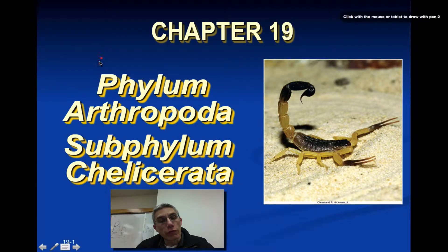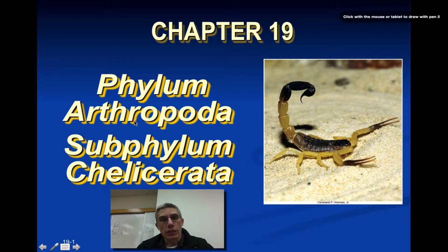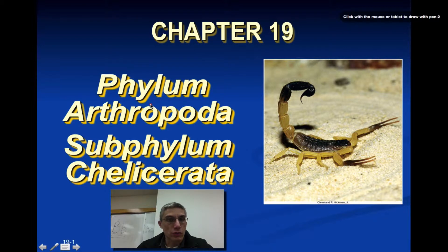Welcome to our very first screencast on Chapter 19. Chapter 19 is our first opportunity to explore a very large phylum — the phylum Arthropoda. The phylum Arthropoda contains a huge number of animals, ranging from crustaceans like crabs to insects and spiders.